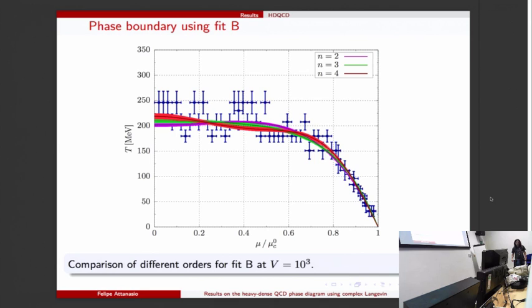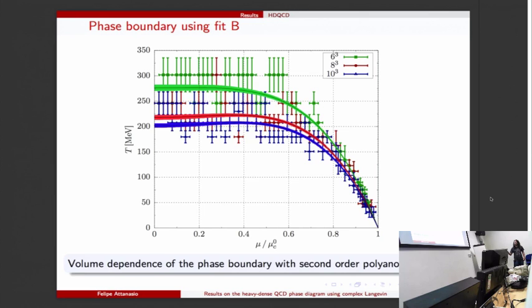Here you see the boundary lines, the fits for all three data: six cubed, eight cubed, and ten cubed. You can see that there is a volume dependence but it seems to be getting smaller - from six to eight compared to eight to ten it gets smaller, the difference, which is expected and good. This is the main result from our paper.